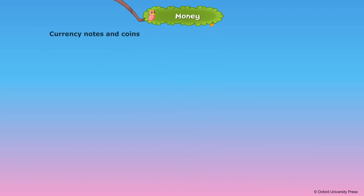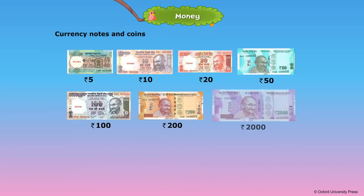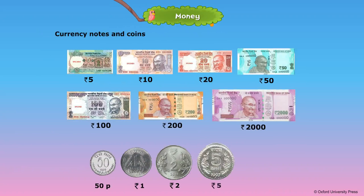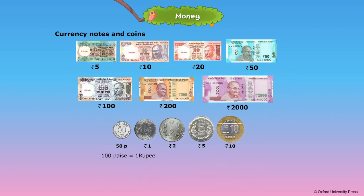Money. We have already learnt about the Indian currency. Coins and currency is called rupee. The smallest value of currency is called paise. See the relationship between rupees and paise. We have already seen 100 paise is equal to 1 rupee. This is also written as 100p is equal to rupee 1. It's the symbol of rupee. It can also be written as Rs.